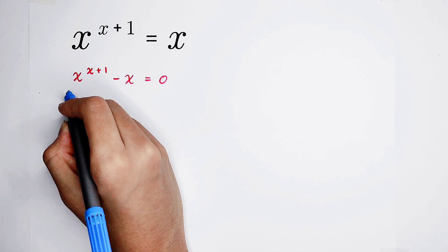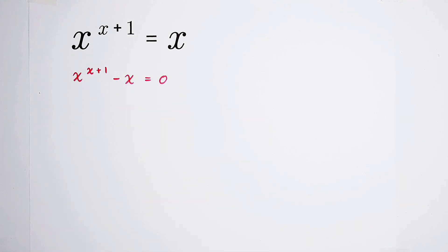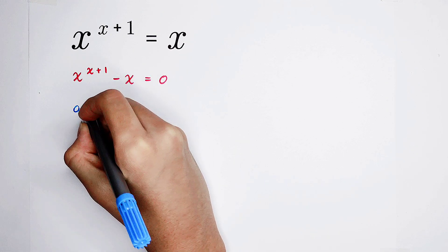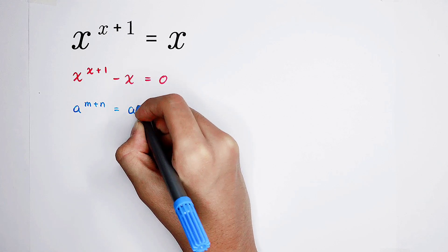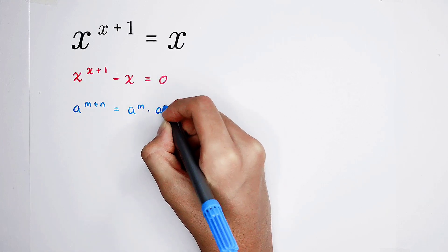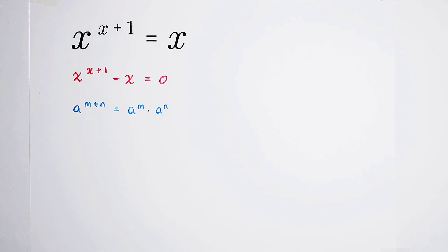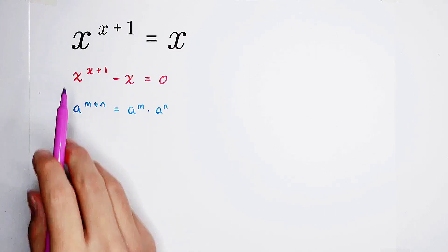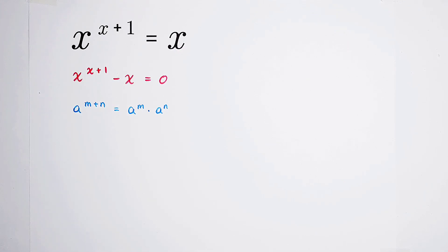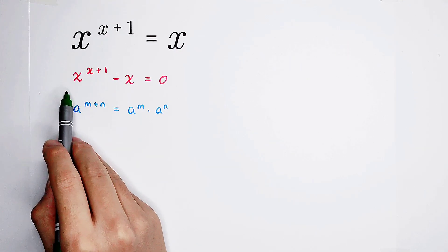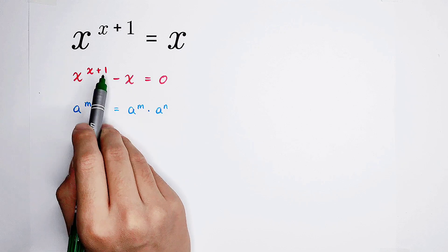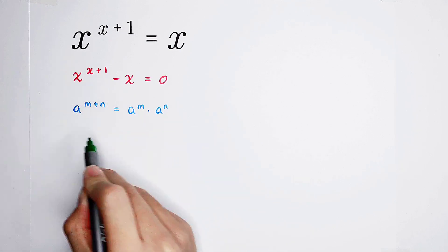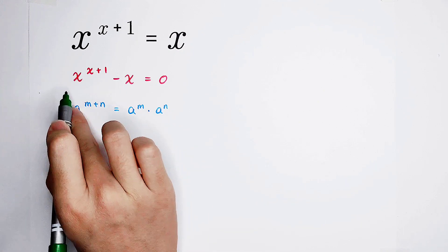x to the power of x plus 1 can be written using the formula: a to the power of m plus n is equal to a to the power of m times a to the power of n. It can help you a lot for separating the x and 1 from the exponent. According to this formula, x from the base is a, x from the exponent is m, and 1 is n.